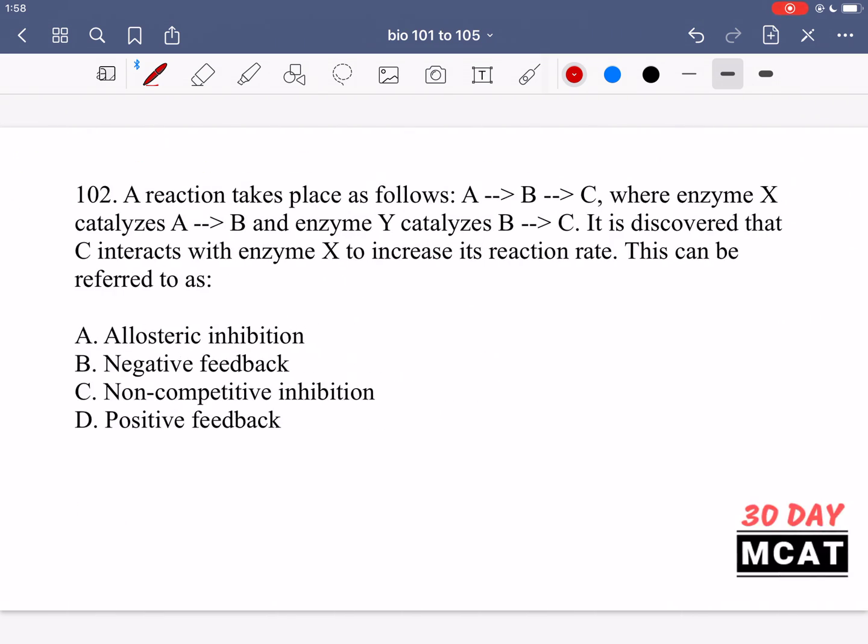In question 102, it says the reaction takes place as follows. A goes to B, B is converted into C. Enzyme X catalyzes the A to B reaction, and enzyme Y catalyzes that second reaction, B to C. It is discovered that C interacts with enzyme X to increase its reaction rate. This can be referred to as what? So we're told that C comes back here, reacts with X, and then it actually increases the reaction. It makes more C being produced.